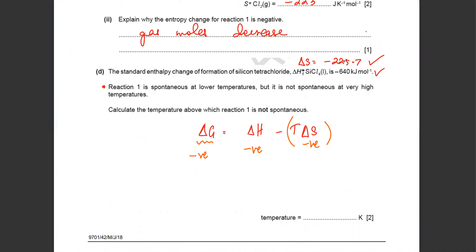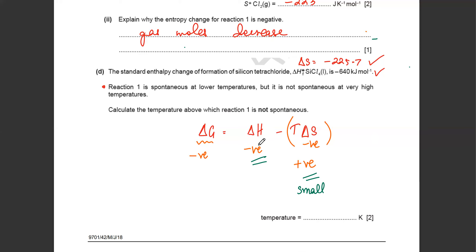One of the terms is negative, the other is actually positive. Both values are negative. He's saying reaction one is spontaneous at a lower temperature, meaning at lower temperature delta G comes out negative. If you want delta G negative, the positive term has to be small. You keep it small by keeping temperature as small as possible, so the negative term dominates and delta G is negative.